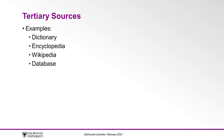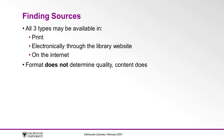A tertiary source could be a dictionary, an encyclopedia, Wikipedia, or a database. Resources of all three types may be available in print form, electronically through the library website, or they might be easily found on the internet. The format does not determine the quality of the information — the content does.